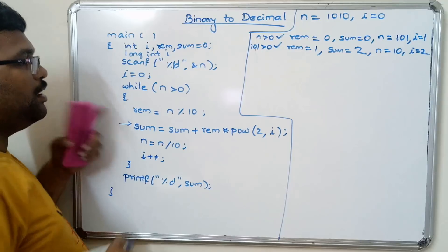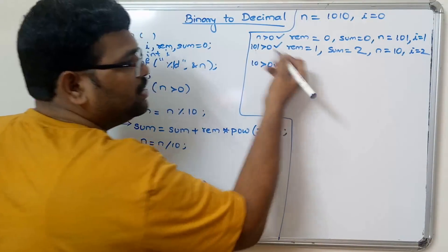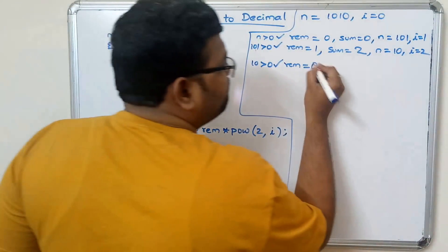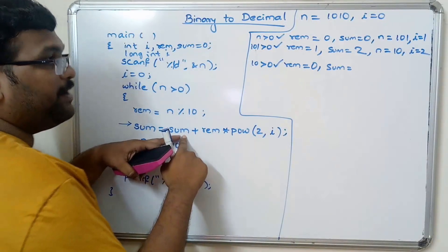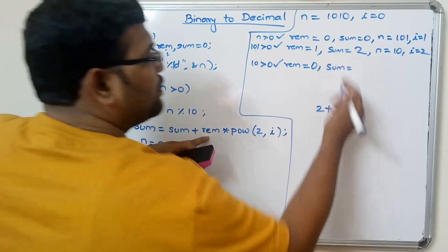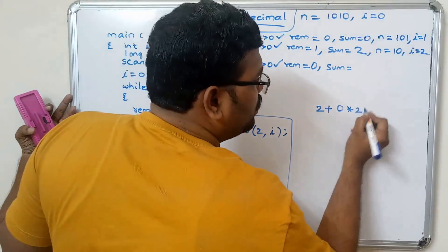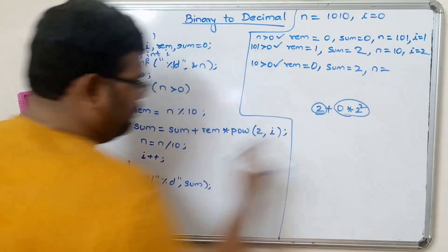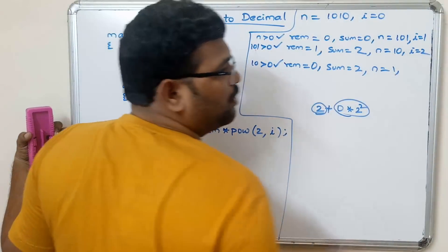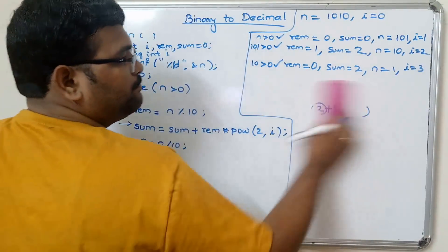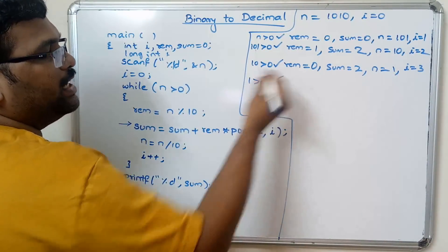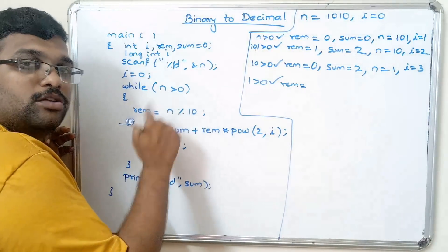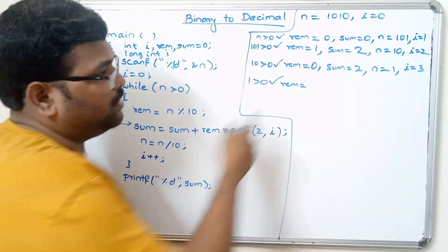Third iteration: n = 10 > 0, condition is true. Remainder = 10 mod 10 = 0. Sum = 2 + (0 × 2^2) = 2. Update n: n = 10 / 10 = 1. Increment i: i = 3.